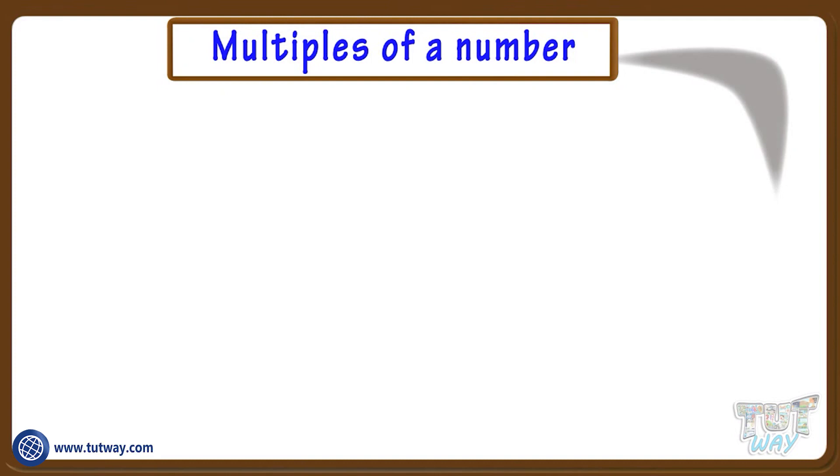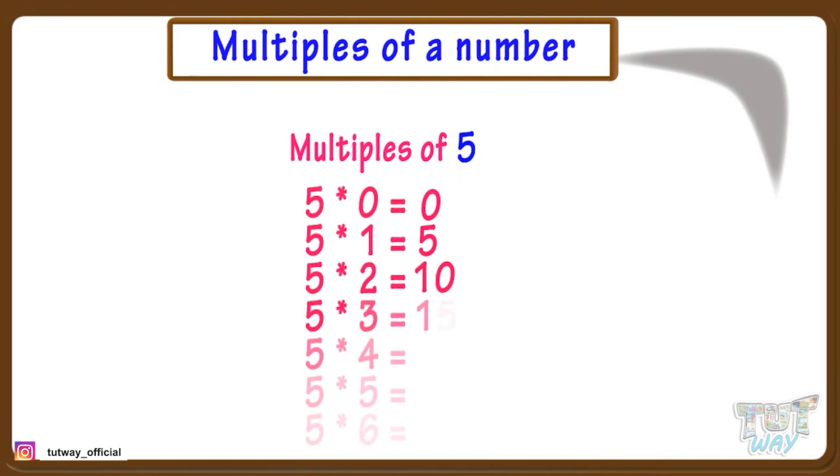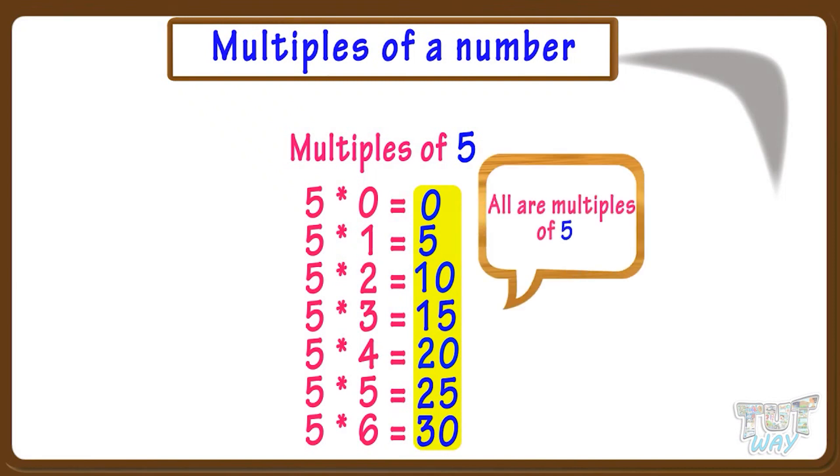We have a number 5. What are its multiples? Numbers obtained by multiplying 5 with any number are its multiples. Here all 0, 5, 10, 15, 20, 25, 30 and so on. All the numbers that come in a multiplication table of 5 or step counting by 5 are its multiples.